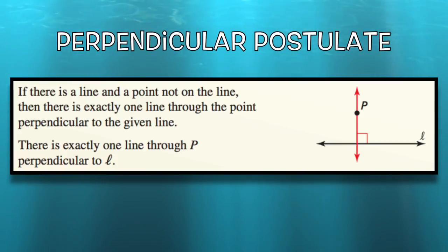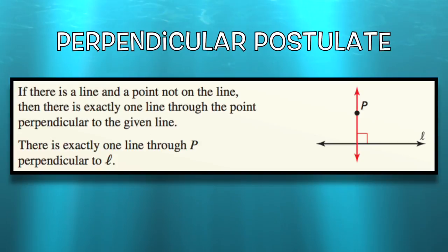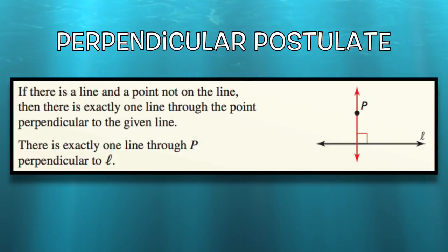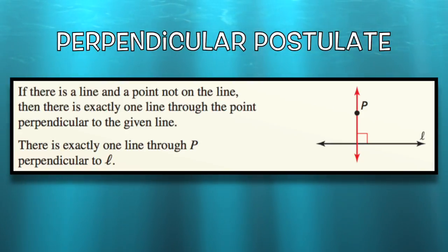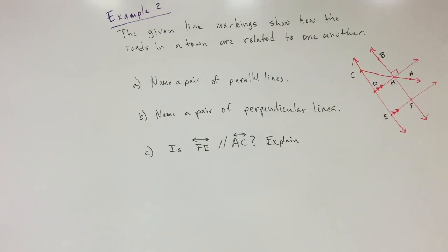Next is the Perpendicular Postulate. It says that if there's a line and a point not on that line, then there's exactly one line through that point perpendicular to the given line. So with line L and point P not on line L, there's only one line I can draw through point P that is perpendicular to line L.